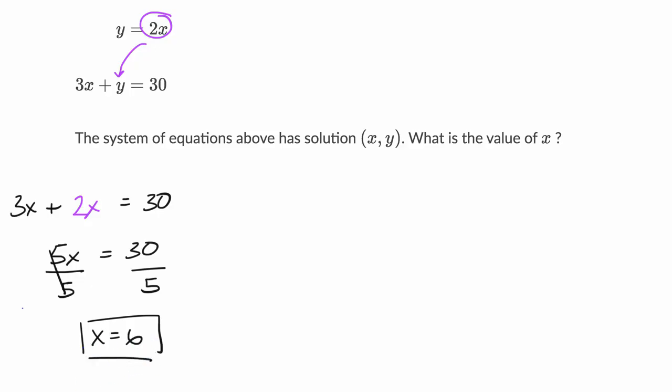Now another way we can approach this is through elimination. If I subtract y from both sides of this top equation, I will get 0 is equal to 2x minus y. Or, of course, I could write that as 2x minus y is equal to 0.